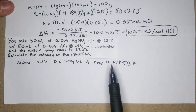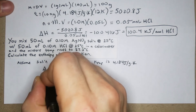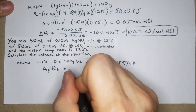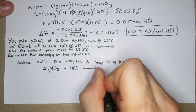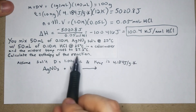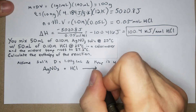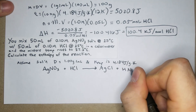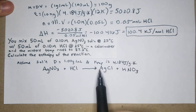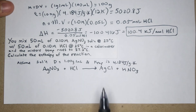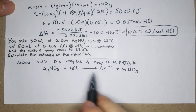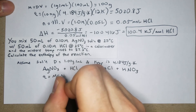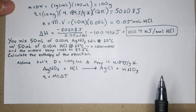It's helpful to write out the balanced equation here: AgNO₃ + HCl → AgCl + HNO₃. Checking the balance: 1 Ag, 1 Ag; NO₃, NO₃; 1 H, 1 H; 1 Cl, 1 Cl — everything is balanced and charges are balanced too. Now we use q = mcΔT.